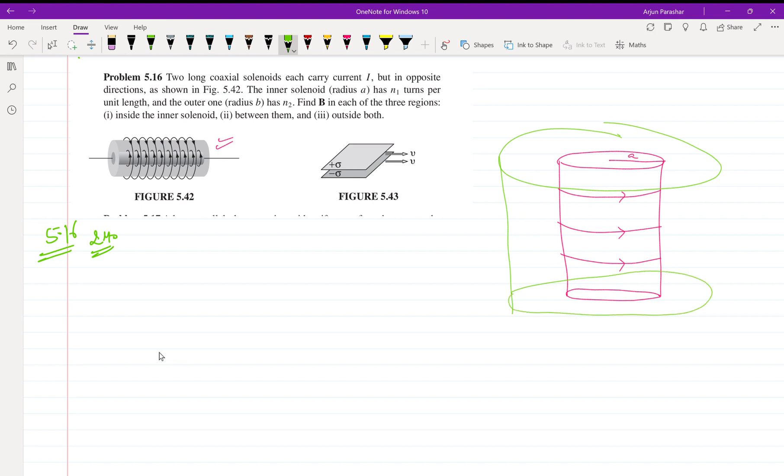This is a solenoid of radius B and it has n2 turns. They are in anticlockwise direction. We are given two solenoids.